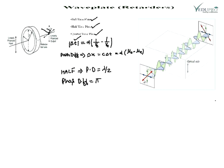The path difference between the emergent rays is (μ₀ − μₑ) × t. If the plate is to act as a half wave plate, this path difference should equal λ/2. Therefore the thickness t = λ / [2(μ₀ − μₑ)].